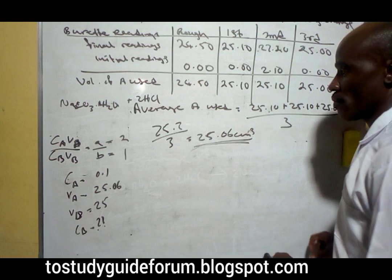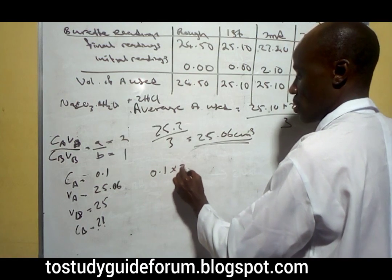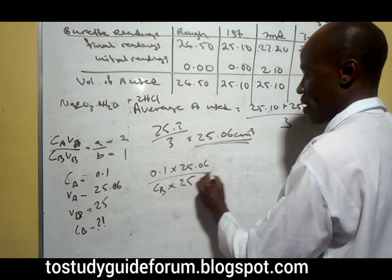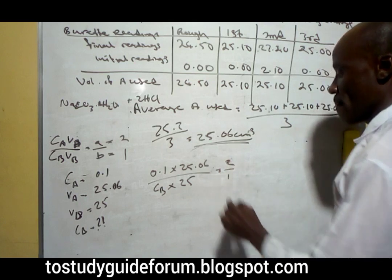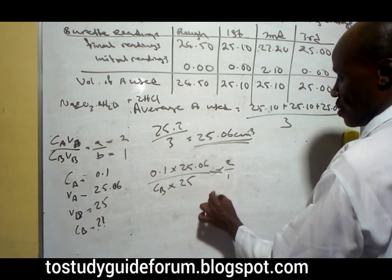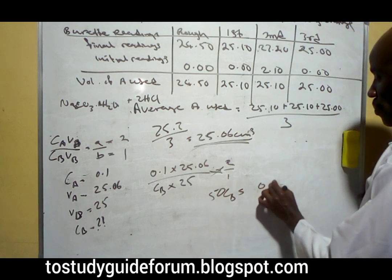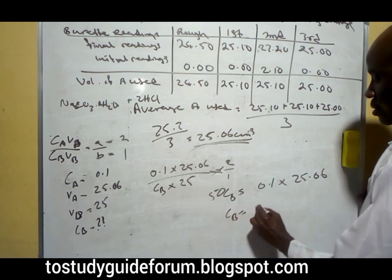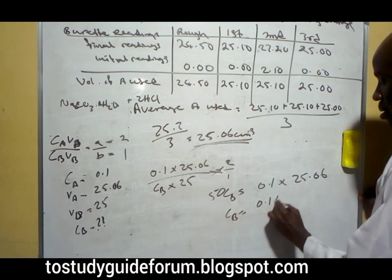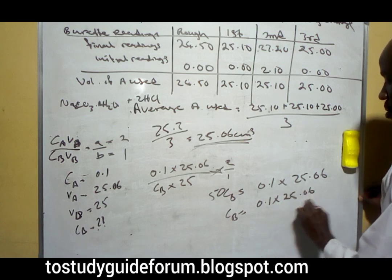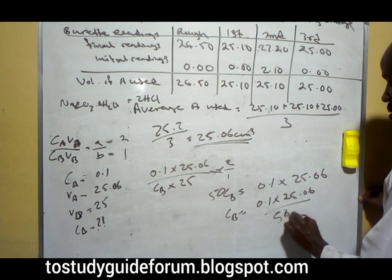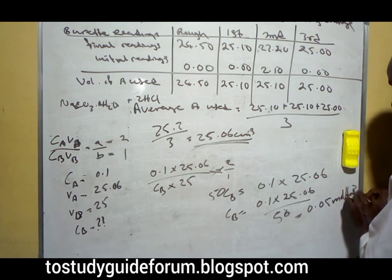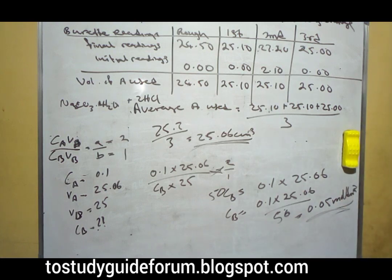If we substitute for that, we have 0.1 times 25.00 equal to 2 over 1. If you cross over you have 50CB equal to 0.1 times 25.00. CB will then be 1 over 50, that will give us 0.05 mole per dm³.